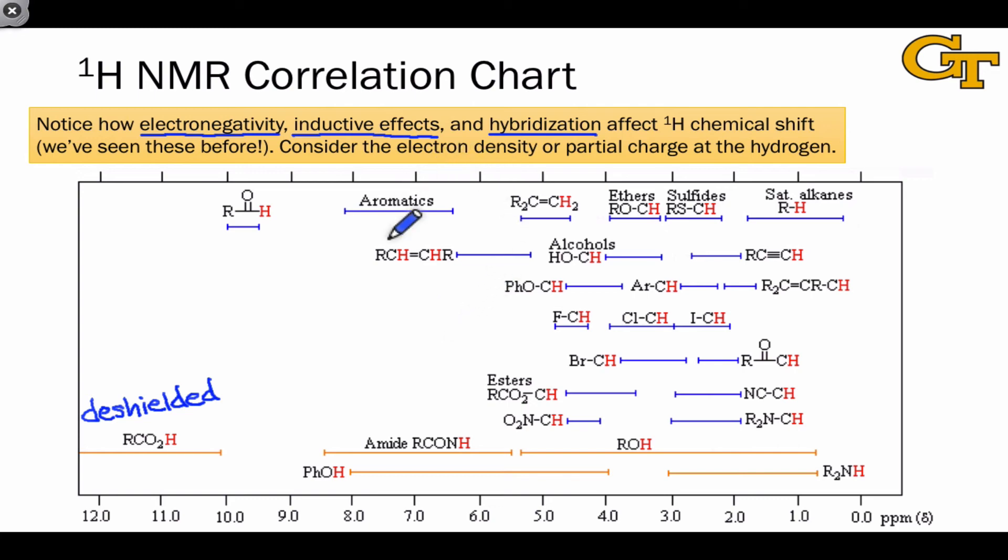We'll discuss this correlation chart more when determining structure from NMR spectra. But we should notice the roles these three factors play in dictating the ranges where we find typical types of protons. For example, a proton attached to a carbonyl group is found very downfield because the carbon is partially positive due to the electronegative carbonyl oxygen.